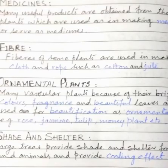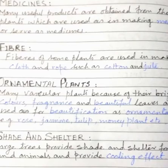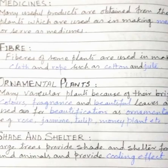Next heading: medicines. Many useful products are obtained from these plants which are used in making medicine or serve as medicines. Next heading: fiber. Fibers of some plants are used in making cloth and rope, such as cotton and jute.